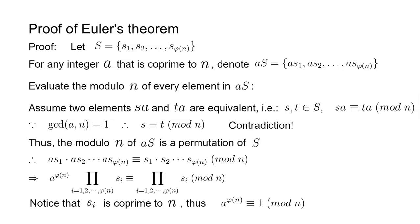It's worth noting that if n is a prime number, then φ(n) by its definition is just n − 1. Then this theorem becomes Fermat's little theorem: a^(n−1) ≡ 1 (mod n). That's why Euler's totient theorem is a generalization of Fermat's little theorem.